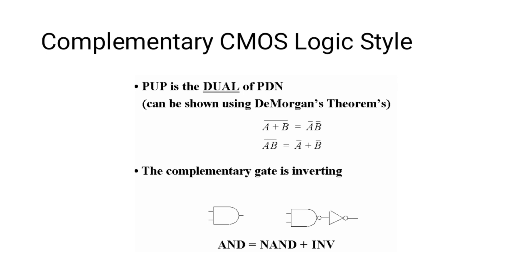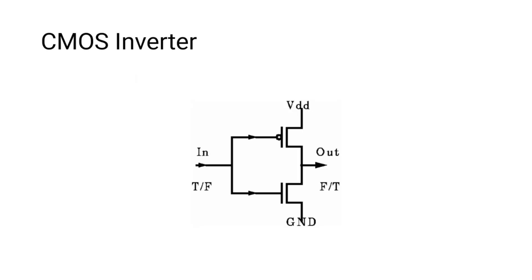We can use this analogy to design complementary CMOS logic styles using a pull-up network (PUN) and a pull-down network (PDN). Using De Morgan's law — (A+B)̄ = Ā·B̄ — the AND gate is achieved by a NAND gate followed by an inverter. In complementary CMOS, PMOS is placed nearer to VDD and NMOS is placed nearer to VSS. Adding a NAND gate with one inverter gives us the AND gate.